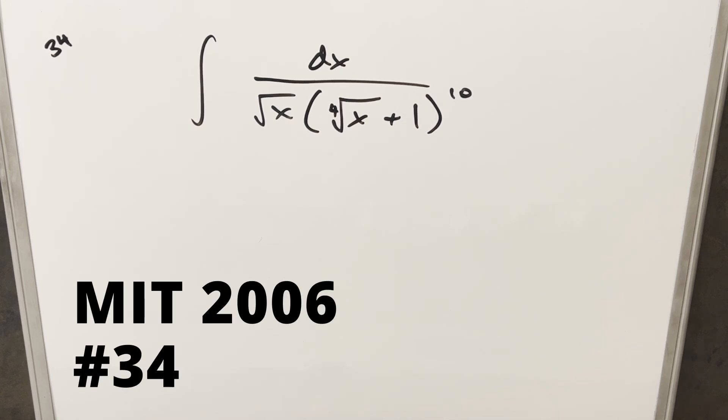Okay, we have another integral. This one's from the MIT integration B 2006, problem number 34. We have the integral of 1 over the square root of x times the fourth root of x plus 1 all to the 10th dx.